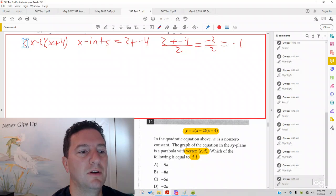Now, if I take that and I plug it in over here, then what I wind up with is negative 1 minus 2, negative 1 plus 4.